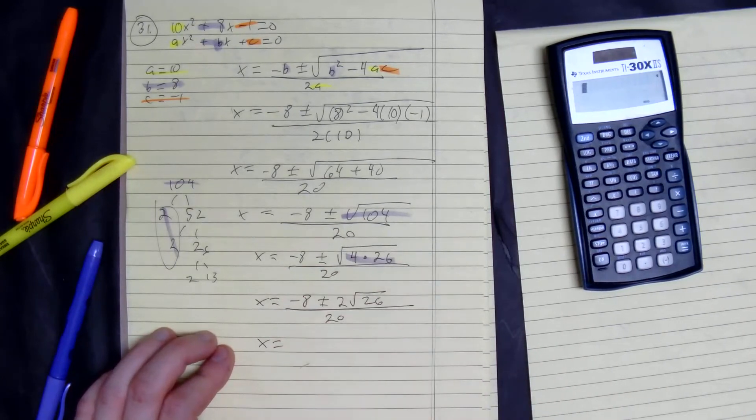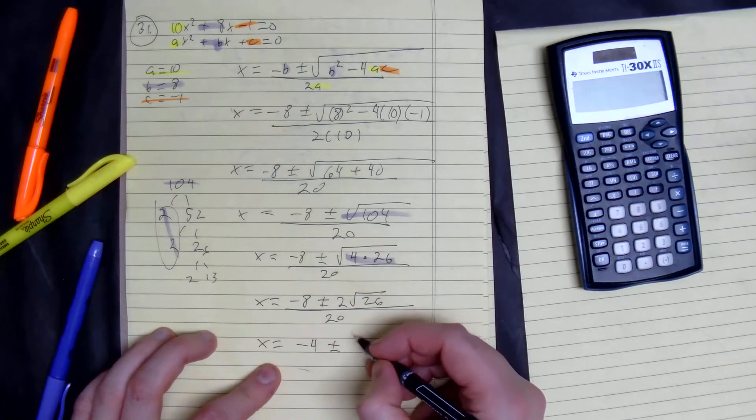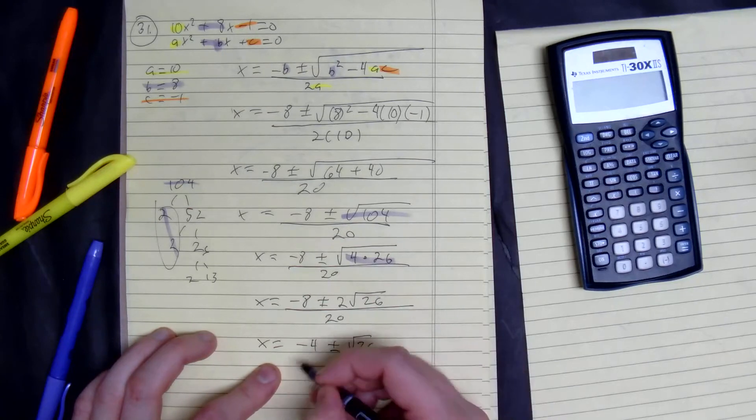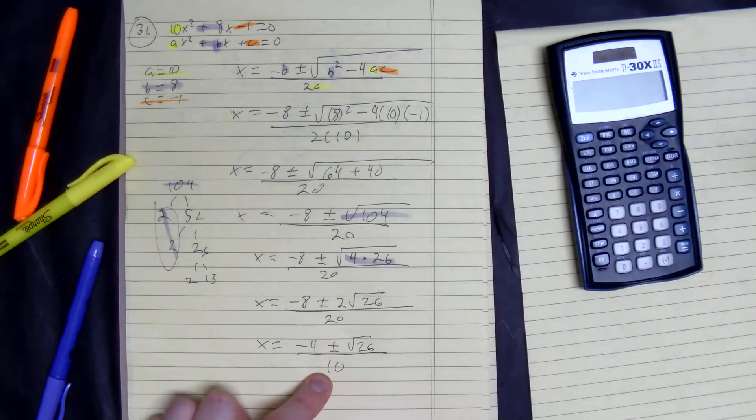X equals, GCF between those three numbers would be a 2, negative 4 plus or minus square root of 26 divided by 10. Negative 4, 1, 10, no more GCF.